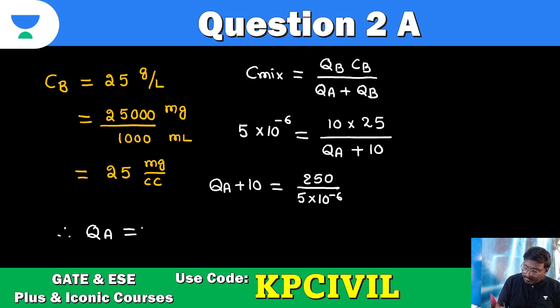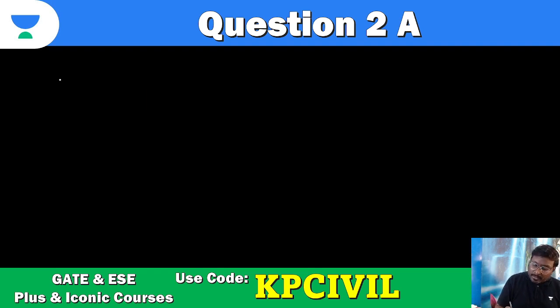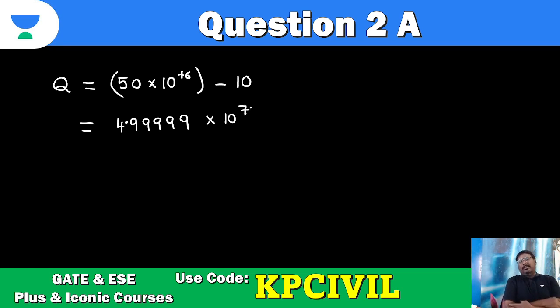Qa plus 10 equals 50 into 10 power 6 minus 10. So this is very important, Qa equals 50 into 10 power 6 minus 10. Sorry, 10 power plus 6, plus 6 minus 10. So you can write this as 49,999,990 or else you can write 4.9999 into 10 power 7. You can write like this. But this is cc per second.